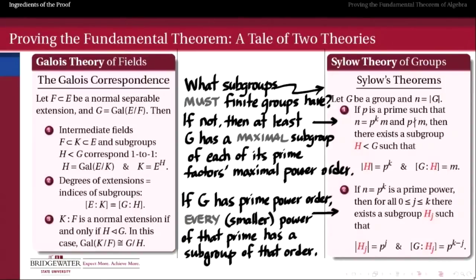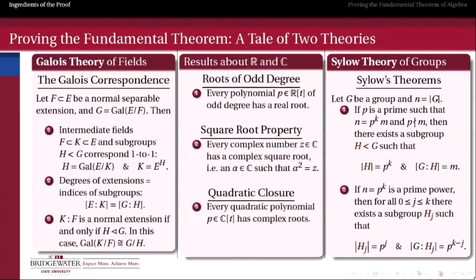Finally, we need some special facts about the complex field and the real subfield. First, every polynomial whose coefficients are real and which has an odd degree must have at least one real root. This can be proven in calculus using the intermediate value theorem, because any polynomial of odd degree will approach positive infinity as t goes to one extreme and negative infinity as t goes to the other, and being continuous it must cross the t-axis and therefore have a real root.